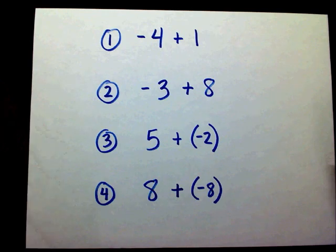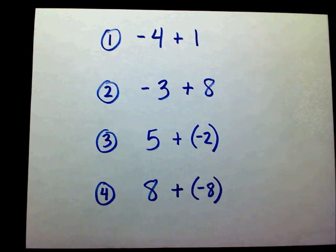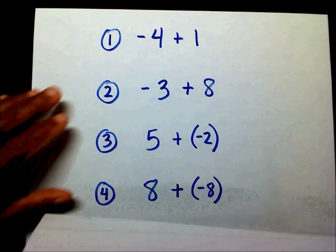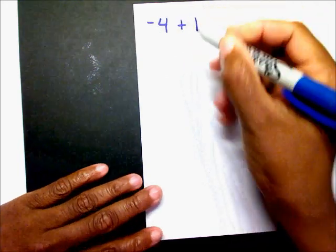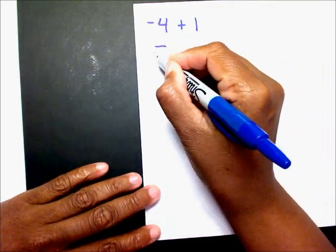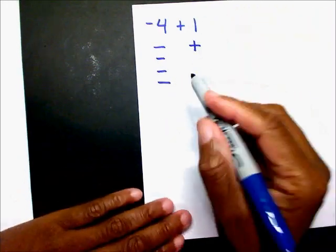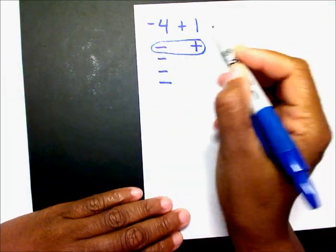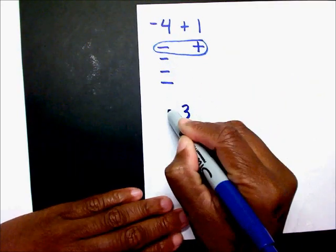We're back. I hope you went through the whole process I went through, showing your positive and negative signs. Let's work the first one. You have negative four plus one. I have four negatives and I have one positive. How many zero pairs can I create? Here's my zero pair right here. So the answer to negative four plus one is negative three.